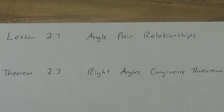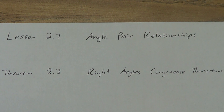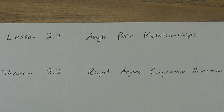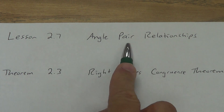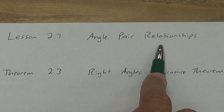All right, we're ready for lesson 2.7. I'm not sure — I might make this into two short videos. We'll kind of see how quick this first one goes. Be ready, it might be two separate videos. Lesson 2.7 is called angle-pair relationships.